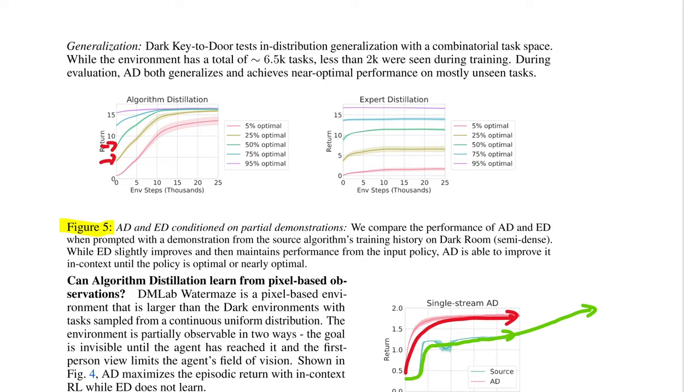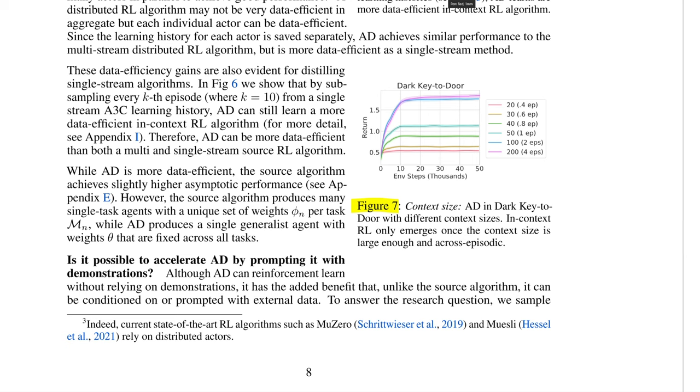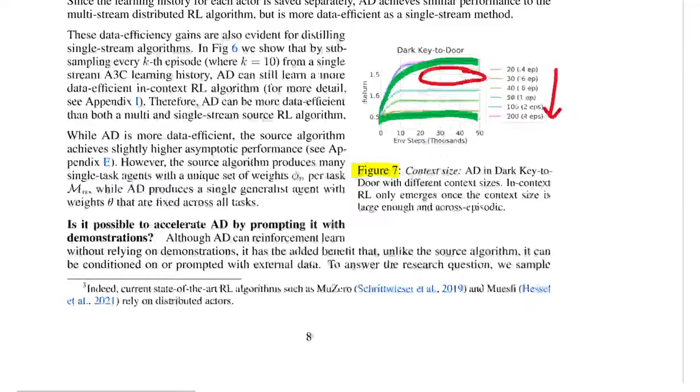And looking at some of the final results down here in Figure 7, we can see an ablation showing how much the model improves with a larger context length. And what we're seeing here is that with a small context length, the model does poorly. And with a larger context, it does quite well. The notable takeaway here is where we can see a pretty giant gap between a context size of one and two episodes. And this likely occurs because once the model can see a significant portion of more than one episode, it's able to learn how the model has improved between episodes. The whole point here is that we're learning what changes from episode to episode. So if your context isn't capturing that, it makes sense that the model is going to perform poorly.